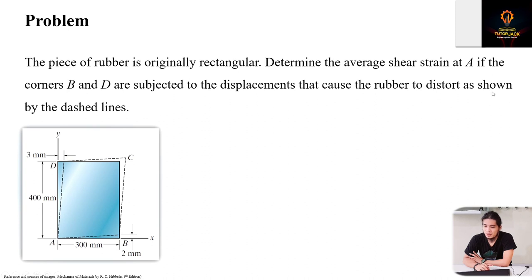We're asked to determine the average shear strain at A if corners B and D are subjected to displacements as shown. So this is the new shape shown by the dashed lines that caused the rubber to distort as shown by the dashed lines.